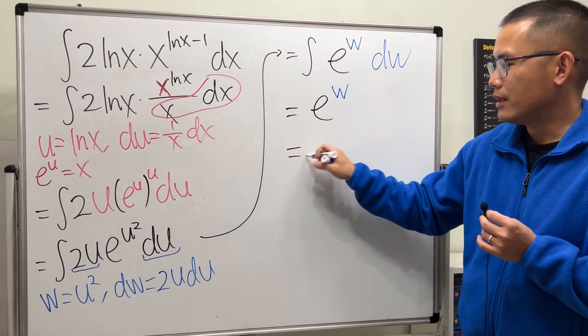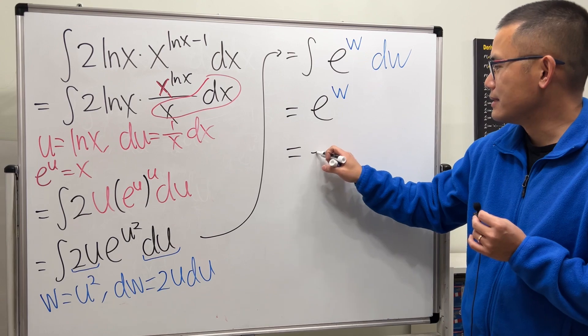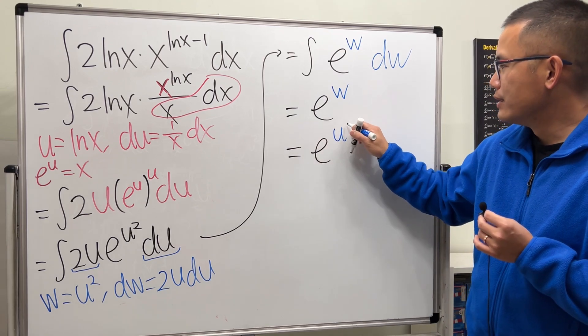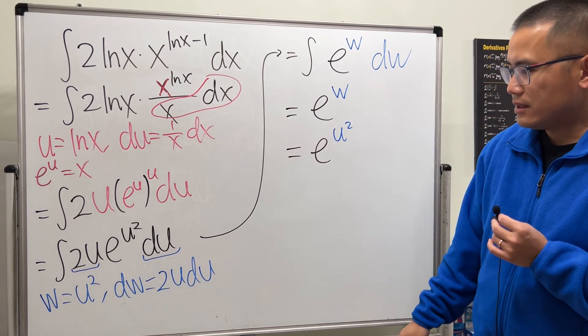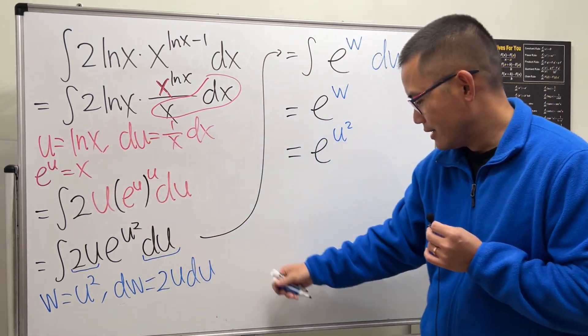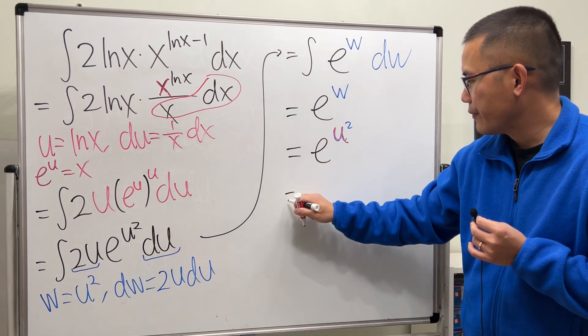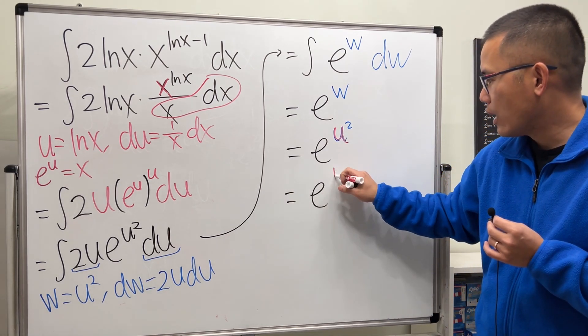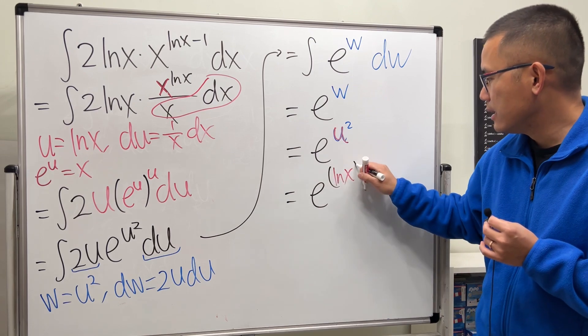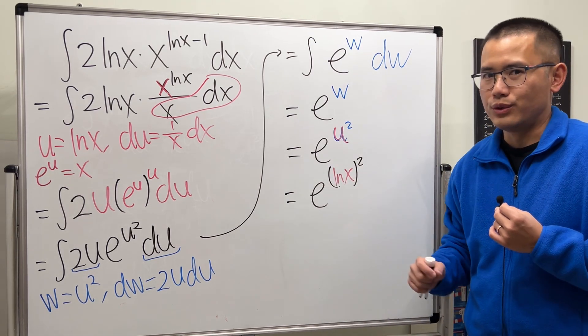And what's w? Look back, w is u squared. So this is the same as e to the u square power. And what's u though? u is lnx. So I'm going to put this right here, we have e to the lnx and then square. And you see we are done, but in fact we can do better than this.